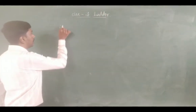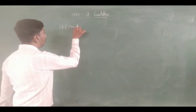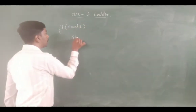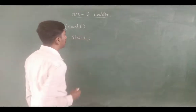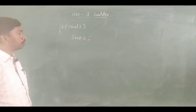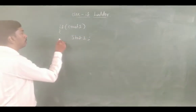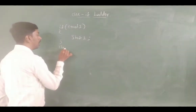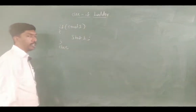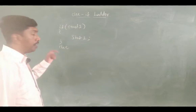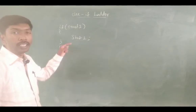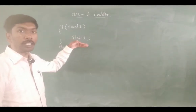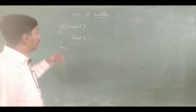For example, if condition 1 is true, then statement 1 will take the execution. By chance, if the condition is false, then it will go for the else. Again, we have to check another condition — it is a multi-way.